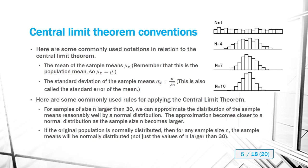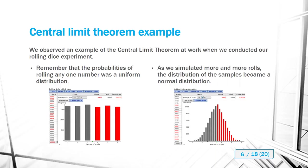Now if the original population is normally distributed to begin with, there's no sample size 30 limit we have to reach — whatever the sample size is, that's what it is, because we're already normally distributed, so the sample means will be normally distributed. We've already seen an example of the central limit theorem in play with the dice experiment. The individual dice outcomes produce a uniform distribution, but as we put samples into groups of five and roll more and more, the distribution of the sample means becomes normal — and more normal the more we roll.